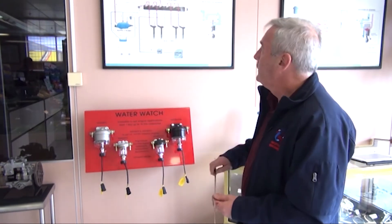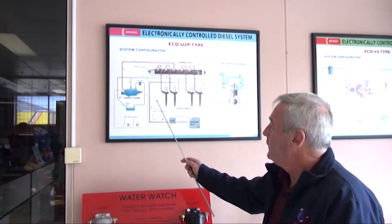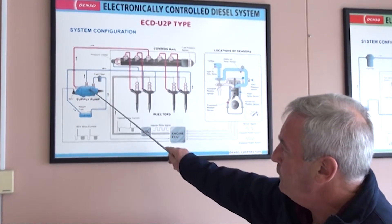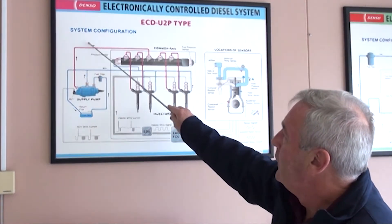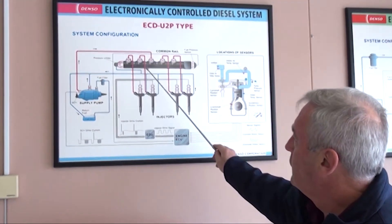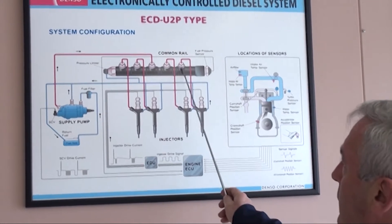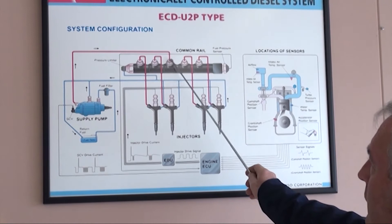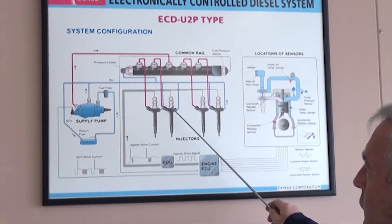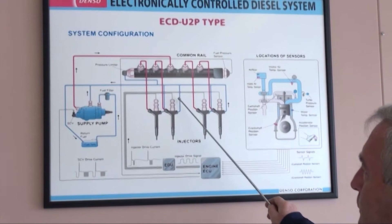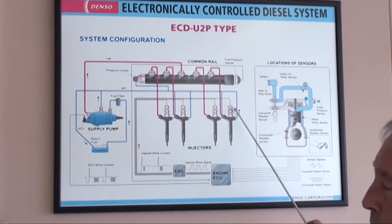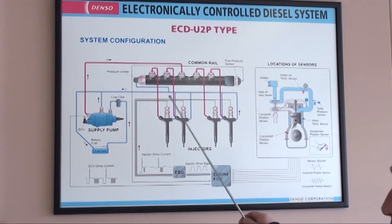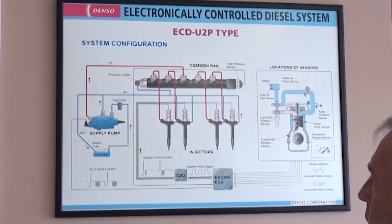Using this diagram, we have a supply pump here, which draws fuel from the fuel tank. This supply pump pressurises the fuel and comes up to what we call the common rail. It's called common rail because it's common with all injectors. This high pressure fuel is then supplied to the injectors, which are operated electronically with pulsing. It's a very high pressure system — it operates around 180 MPa, or 30,000 pounds in the old language.